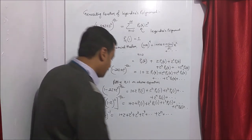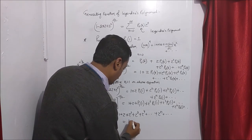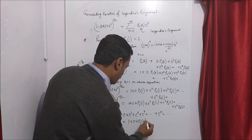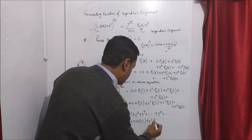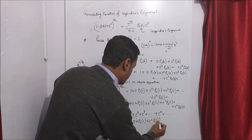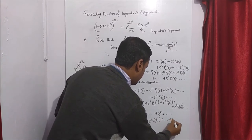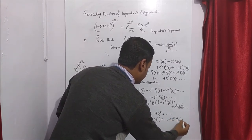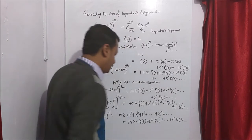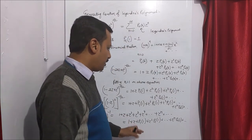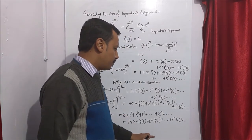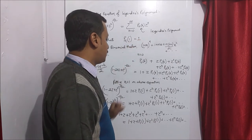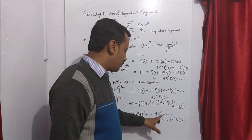The RHS has terms 1 plus z plus P1(1) plus z squared P2(1) plus z cubed P3(1), continuing to z to the power n times Pn(1). Now looking at both equations, we need to find Pn(1), so we compare the coefficients of z to the power n on both sides.